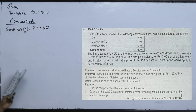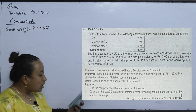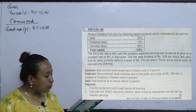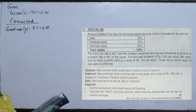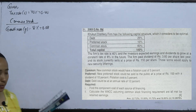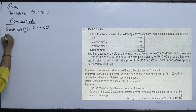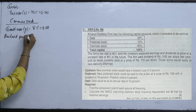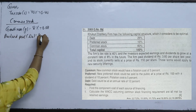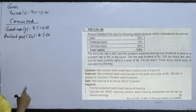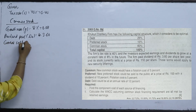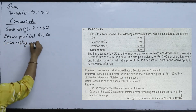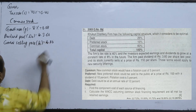The firm paid a dividend of Rs. 3.60 per share last year, meaning D0 = 3.60. The stock currently sells at a price P0 = Rs. 110.